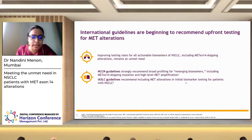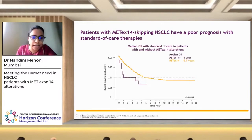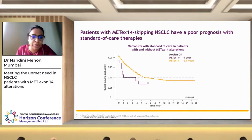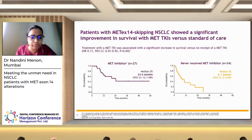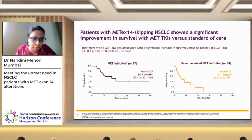International guidelines are slowly beginning to recommend upfront testing for MET alterations because of the availability of MET-targeting drugs. Retrospective Kaplan-Meier data shows that MET exon 14-mutated patients do worse than those without mutations, and patients who received a MET inhibitor had a higher median OS than those who never received one, with this finding also tested prospectively in randomized trials.